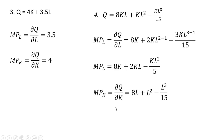Now the marginal product of capital — the partial derivative of the production function with respect to capital — holding L constant. The derivative of 8KL is just 8L. The partial derivative of KL squared is just L squared. And for the last term, we're left with L cubed divided by 15.